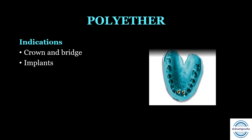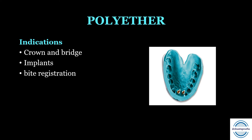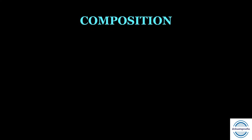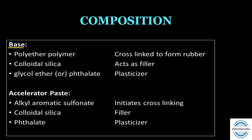Polyether elastomers were introduced in Germany in 1960. Indications: crown and bridge, dental implants, and bite registration — notably, polyether is the best material for dental implants, a common MCQ. Commercial names: Impregum F or Pentamix. Composition — base paste: polyether polymer (cross-linked to form rubber), squalidyl silica as filler, glycol ether or phthalate as plasticizer. Accelerator paste: alkyl aromatic sulfonate as cross-linking agent/initiator, colloidal silica as filler, phthalate as plasticizer.